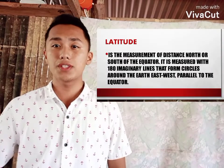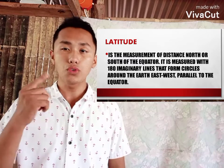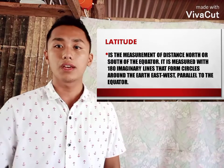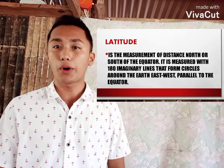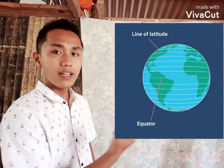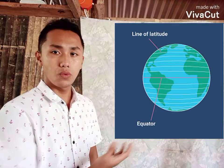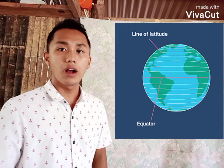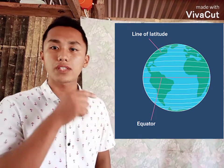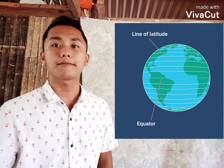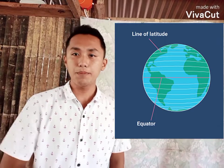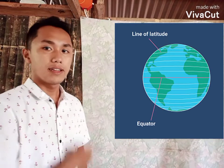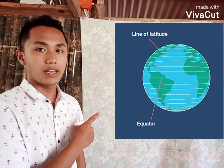Now, what is latitude? Latitude is the measurement of how north or how south a point is. It is a line running from east to west, but it is used to measure how north or how south we are. In the picture, we can see the latitude lines.